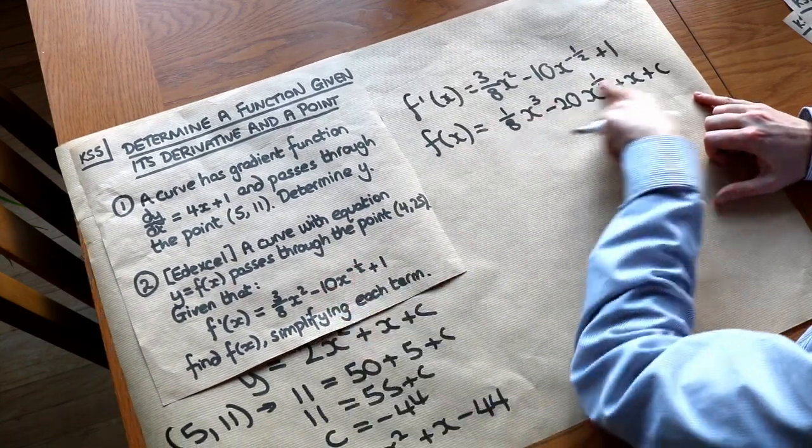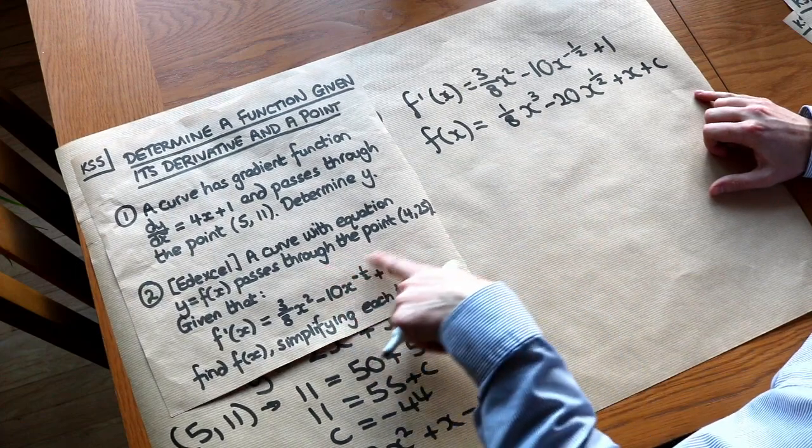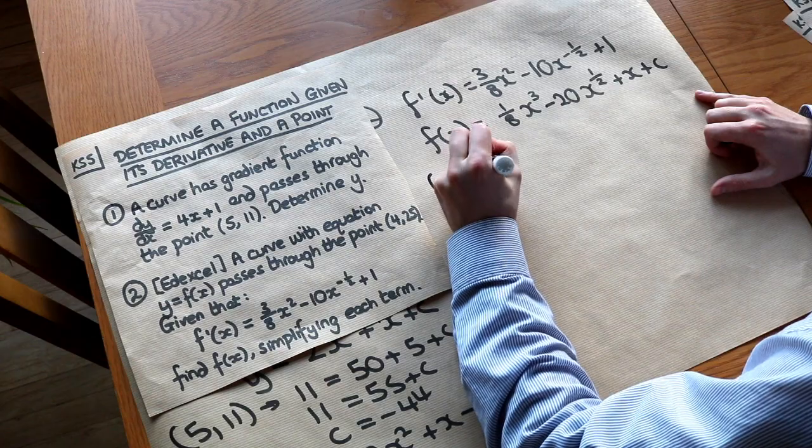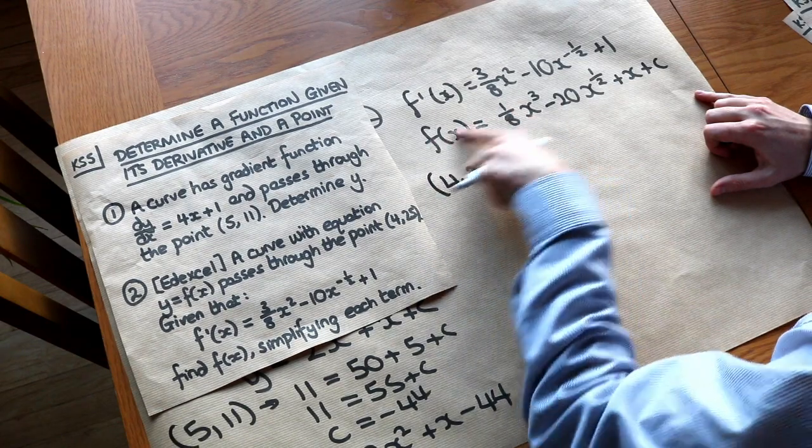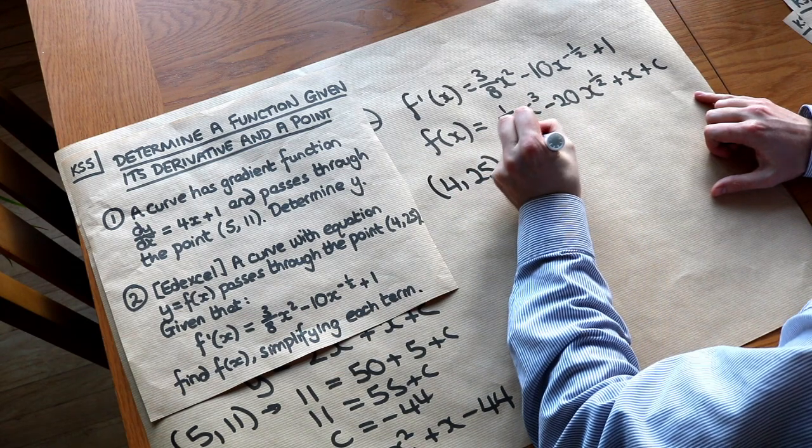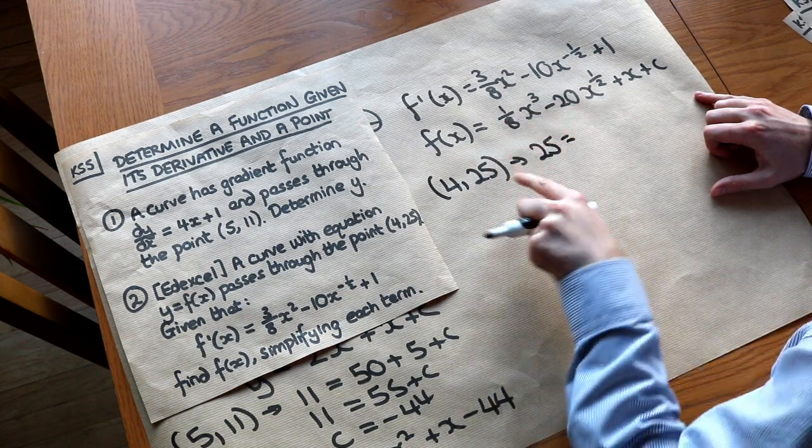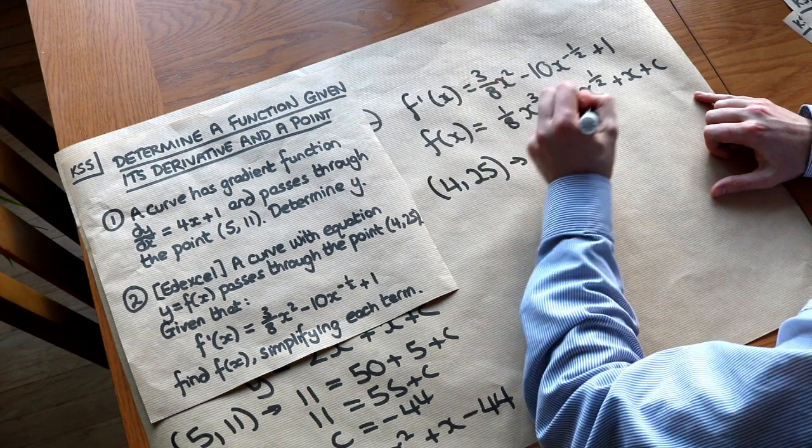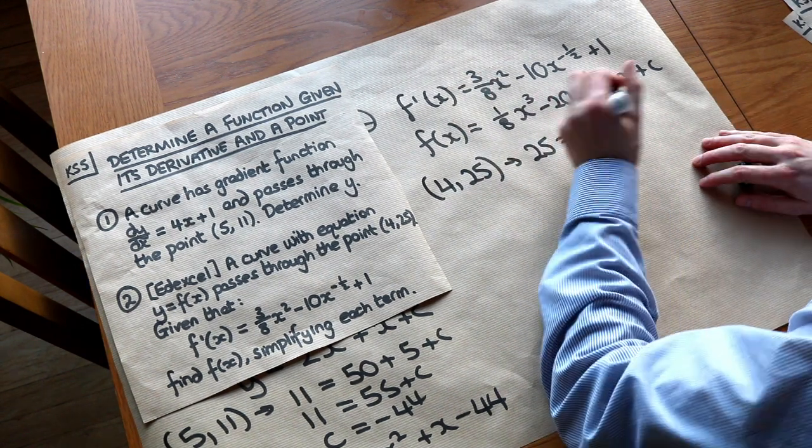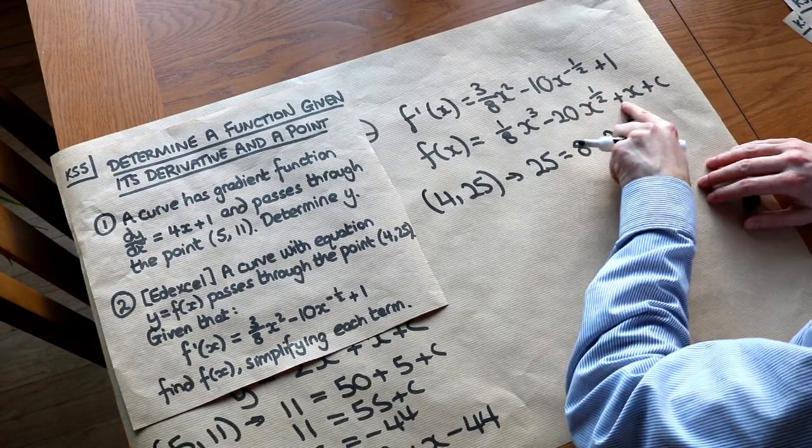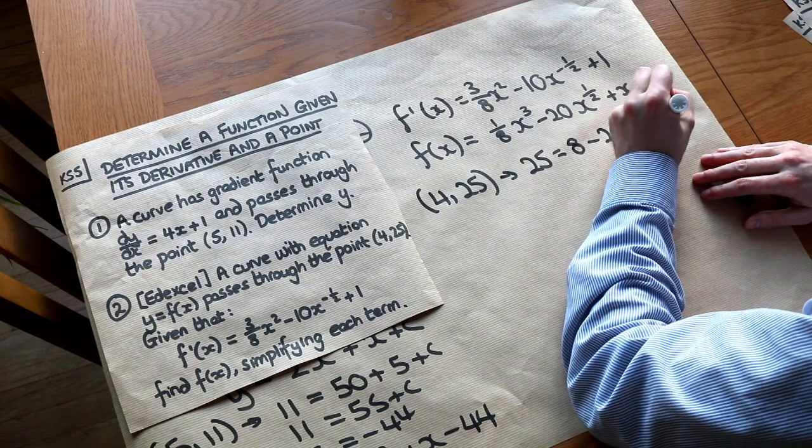So there we go. That's the original equation of the line. But we know it goes through the point (4,25). So if we substitute that x and that y into this equation here, well, this is the y over here. So that's 25 = 1/8 of 4³. That's 64 divided by 8 is 8, minus 20 times 4 to the 1/2. That's the same as √4 plus x, so plus 4 plus c.